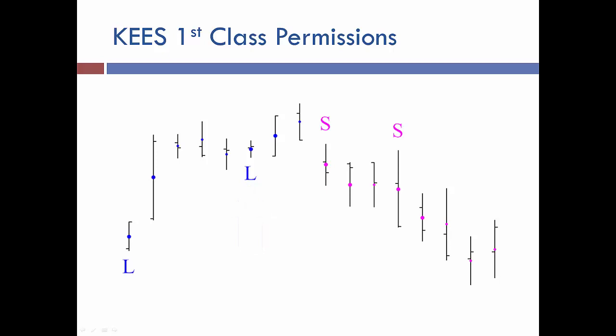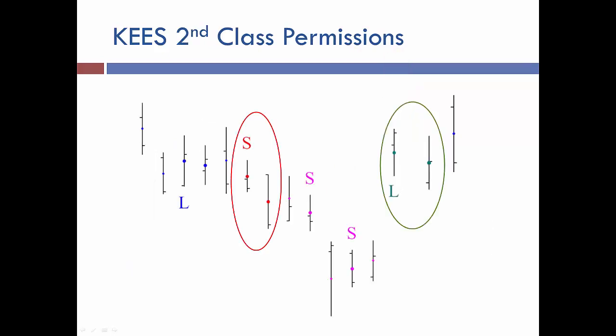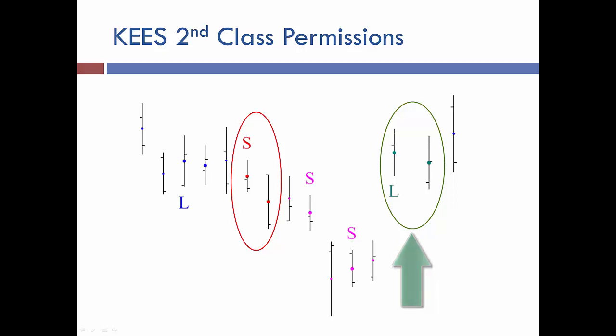However, if everything is permissioned short including the higher time frame filter, then the bar will be pink or magenta and the S signal will also be magenta, indicating a first class short signal. Second class signals take place when the majority of momentum is in one direction but the higher time frame filter is in the opposite direction. For example, a second class short signal is red because the majority of momentum was permissioned short, but the higher time frame filter was still permissioned long.